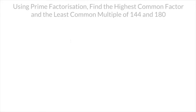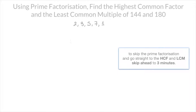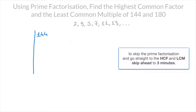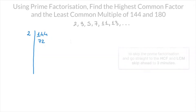The first thing I'll do is write the first few prime numbers: 2, 3, 5, 7, 11, 13, and so on. I'll start by writing 144 as a product of its prime factors. So I write 144 on the right-hand side of a two-column table, and I now look for the smallest factor of 144 within this list of prime numbers. I can see right away that it's 2, so I write 2 in the left-hand column, and 144 divided by 2 is 72. I repeat this process until I reach the number 1 in the right-hand column.